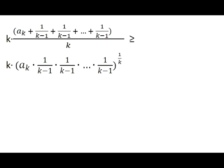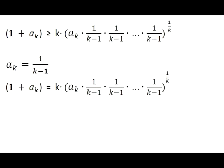Like from the sleeve of a magician, the product of these terms appears on the right side of the inequality. Note that equality is achieved if and only if a_k equals 1 over k minus 1. So the initial expression 1 plus a_k is not less than the expression on the right side, with equality if and only if a_k equals 1 over k minus 1.